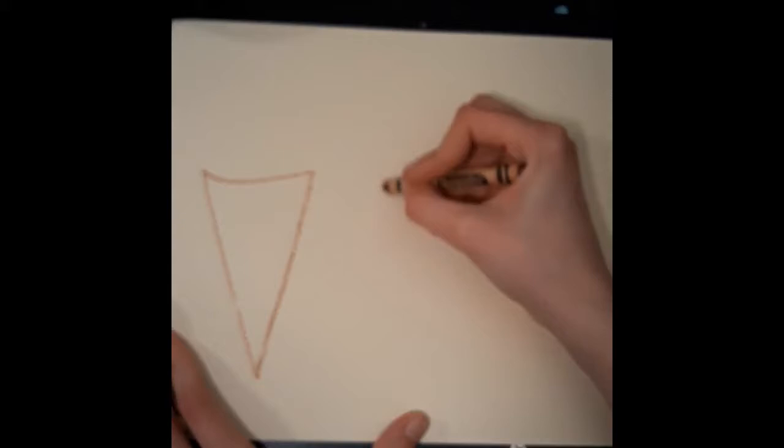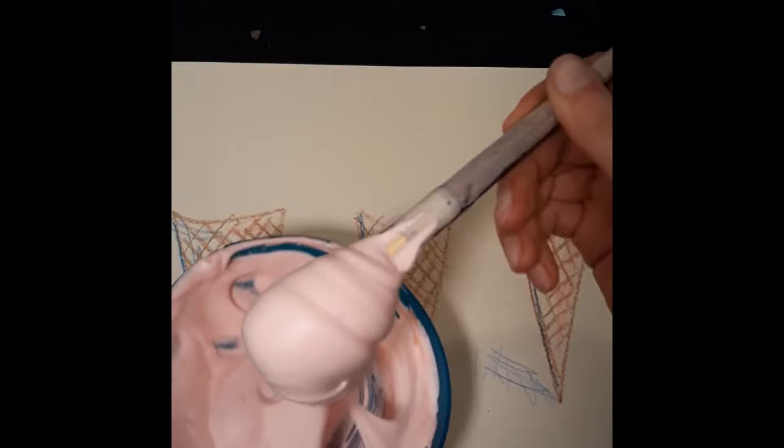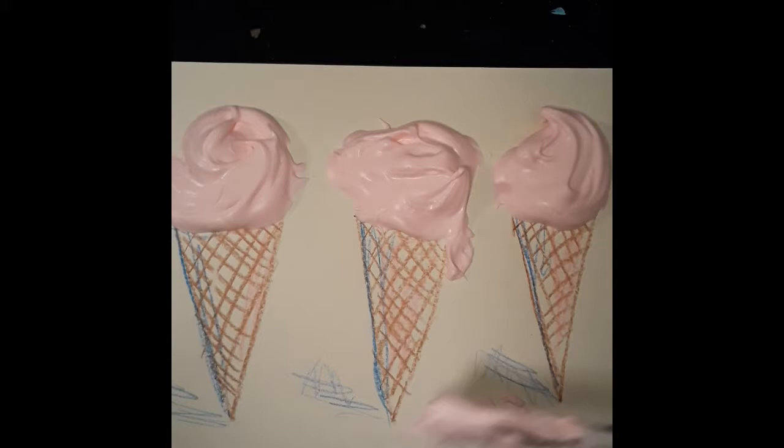Then I'm going to draw three quick ice cream cones, but you could draw cupcakes or donuts, whatever you want to add icing to. Then I add my ice cream with my goopy shaving cream paint. I'm using my brush to add texture and to make it look like it's melting a little bit. I cut up some paper to add as sprinkles.